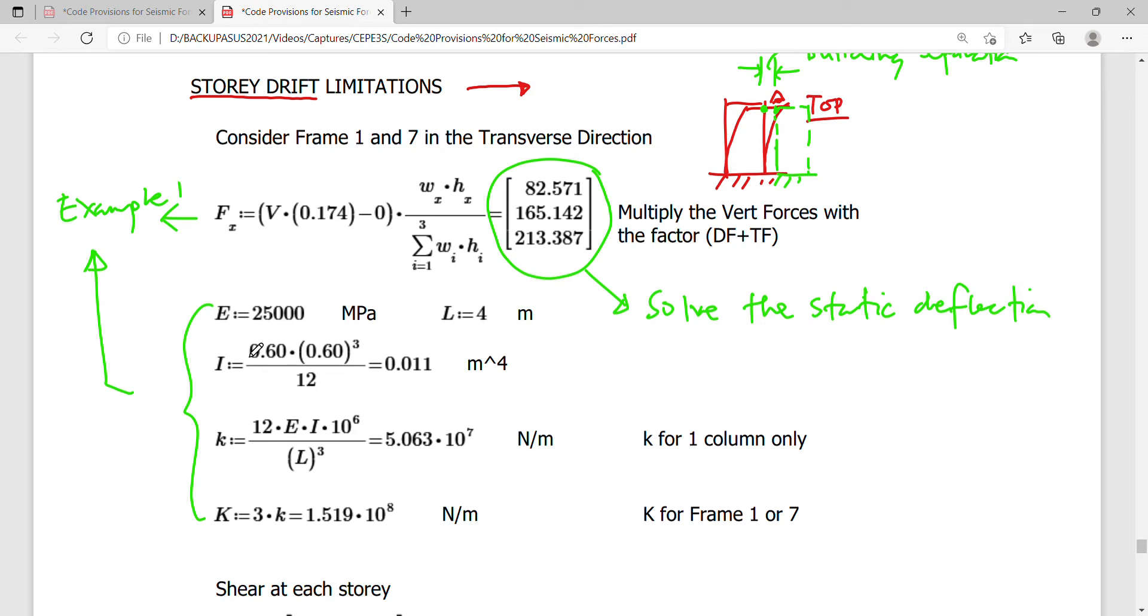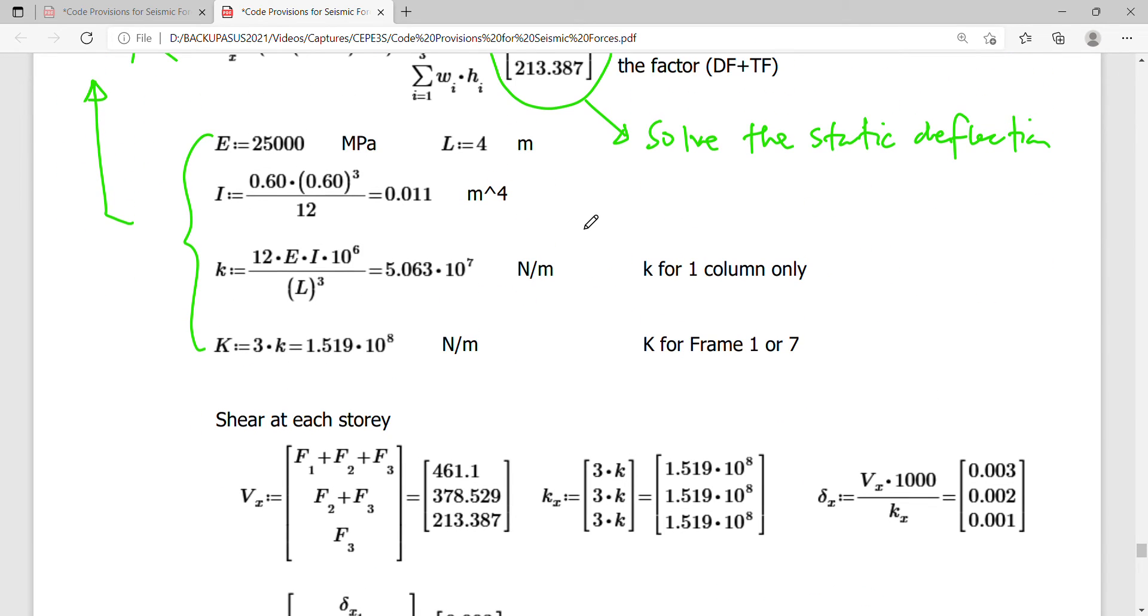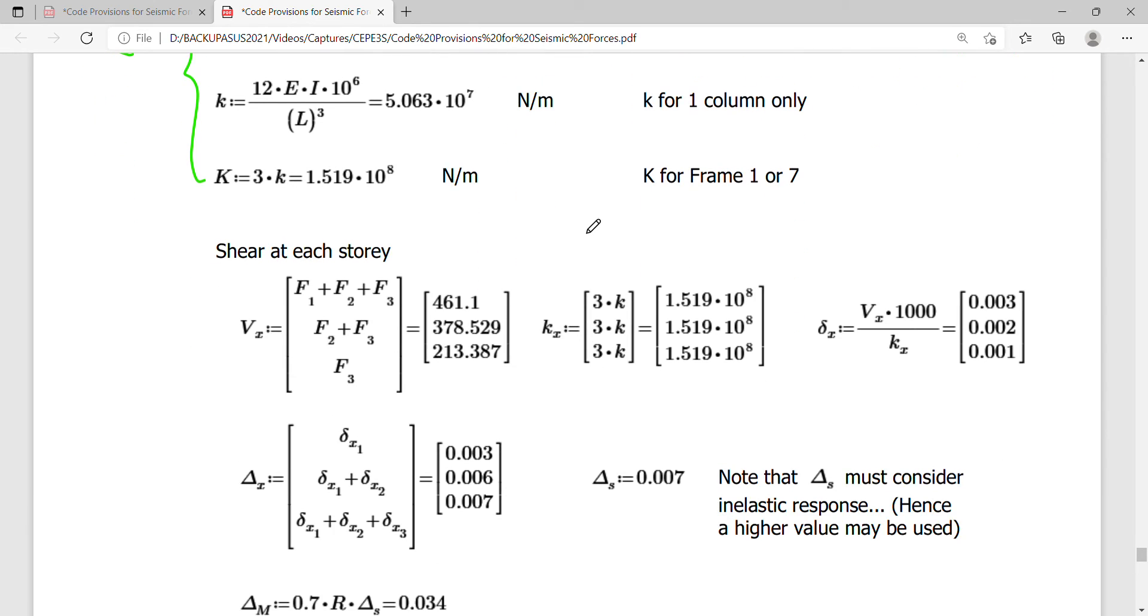Capital K is simply the sum of the columns in one transverse direction. By the way, I'm considering here frames 1 to 7, which are in the transverse direction. The next thing to do is to get the shear at each story by simply adding the forces coming from the top going down to the base.